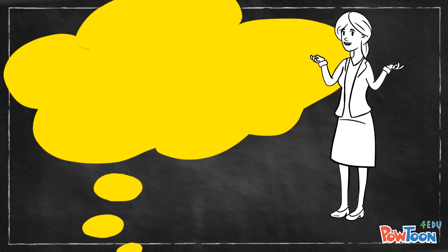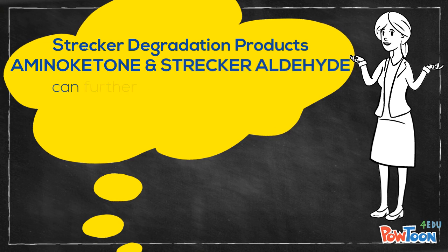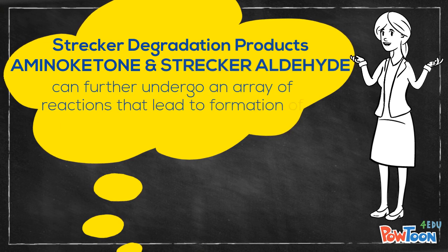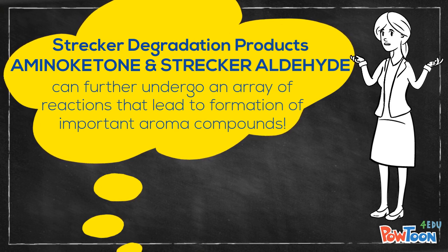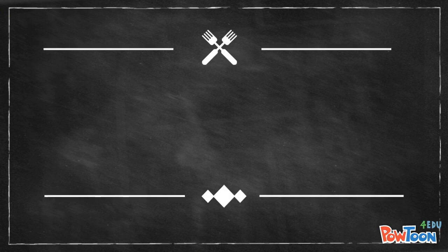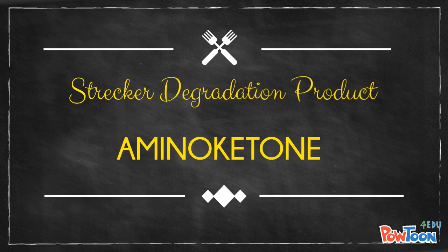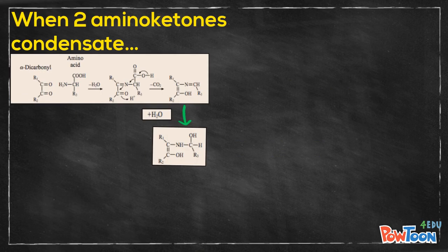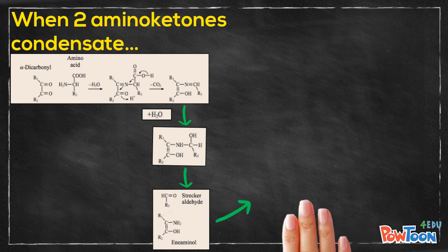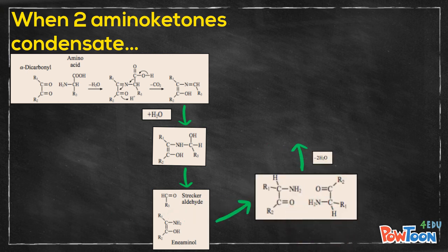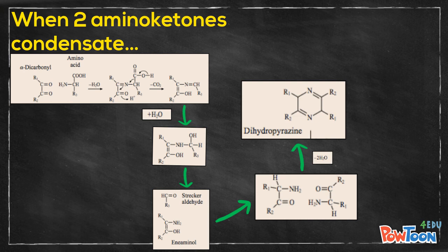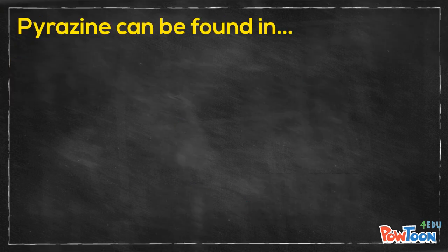Both Strecker degradation products — aminoketones and Strecker aldehyde — can further undergo an array of reactions that lead to formation of important aroma compounds. Aminoketones produced from Strecker degradation can further react by undergoing condensation to form dihydropyrazine, which subsequently undergoes oxidation to produce pyrazine. Pyrazine can be found in food products such as baked and roasted food.